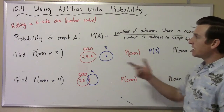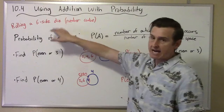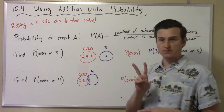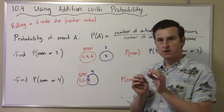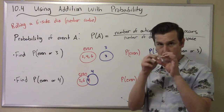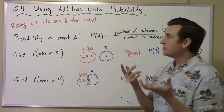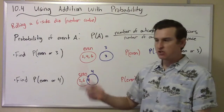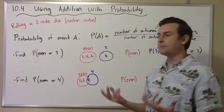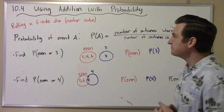What we're doing here is talking about rolling a six-sided die. When you roll dice — dice is plural, meaning more than one — a single number cube is called a die. In your book they call it a six-sided number cube. We're talking about rolling just one die.